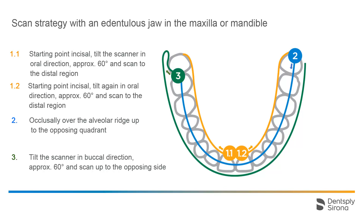Then we scan in one of the two directions, from incisal to distal. We start again incisal, tilt the scanner again approximately by 60 degrees in oral direction, and scan the other side. When we have reached the most distal position, we perform an occlusal scan up to the end of the opposing quadrant. Finally, we tilt the scanner by approximately 60 degrees in buccal direction and scan again up to the end of the opposing quadrant.